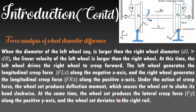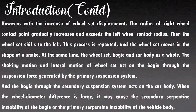At the same time, the wheel set produces lateral creep along the positive y-axis and the wheel set deviates to the right wheel. However, with the increase of wheel set displacement, the radius of the right wheel contact point gradually increases and exceeds the left wheel contact radius. Then the wheel set shifts to the left. This process is repeated and the wheel set moves in the shape of a snake movement.